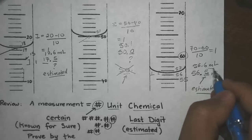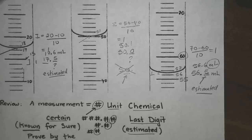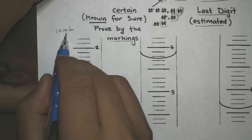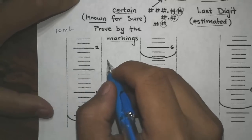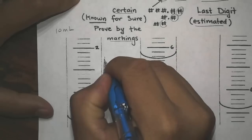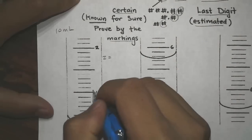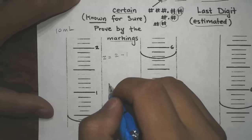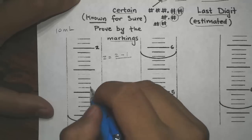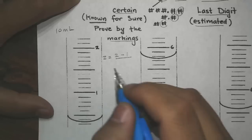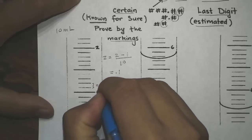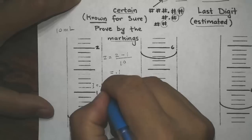Another common graduated cylinder used in chemistry is the 10 milliliter graduated cylinder. Let's find the value of one increment. We take two consecutive numbers — 2 and 1 — so (2 − 1) ÷ 10 = 0.1. Each one of these marks is equal to 0.1, unlike the previous problems where each increment was 1.